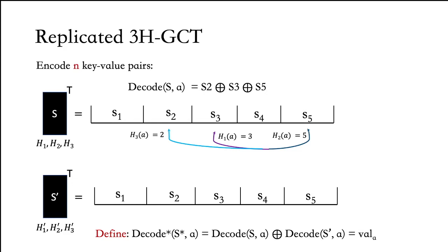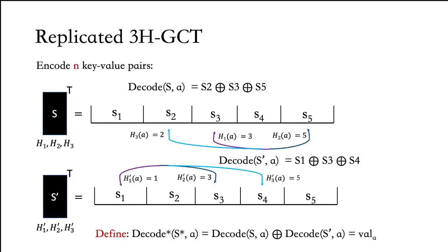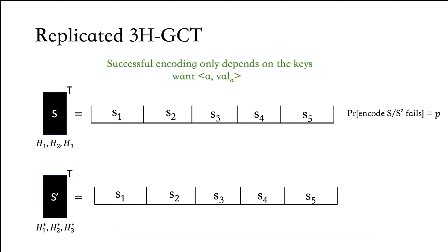In the second OKVS, we apply the three different hash functions, which point to locations 1, 3, and 5, and compute s1 XOR s3 XOR s4 to obtain the decoding of a within s'. We define the decoding of our replicated garbled cuckoo table as the XOR of the decode within the first OKVS and the second OKVS. Now let's see how we encode values successfully into this OKVS.